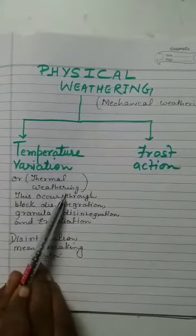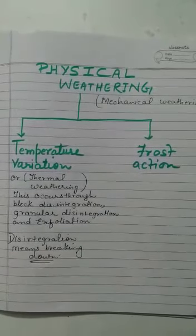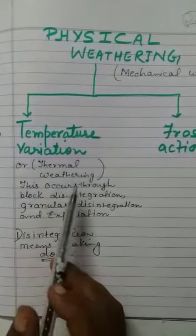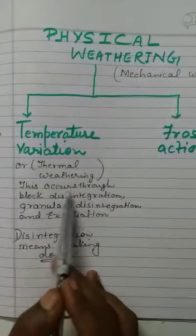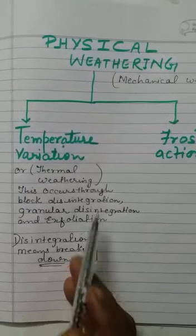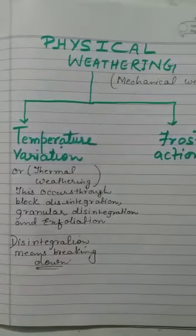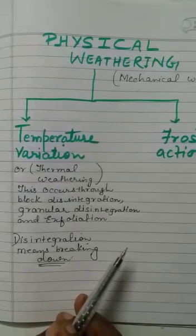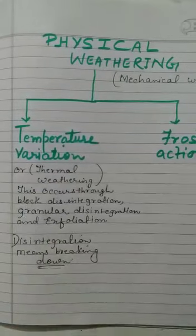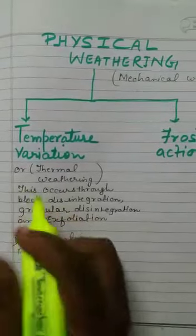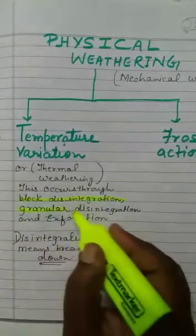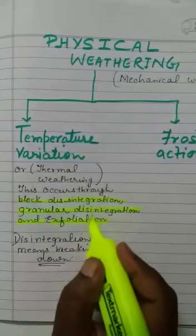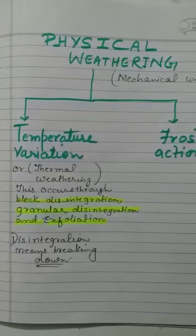This temperature variation is also known as thermal weathering. Here it is divided into three parts: block disintegration, granular disintegration, and exfoliation. We will discuss block disintegration, granular disintegration, and exfoliation separately, and try to understand why this weathering happened.